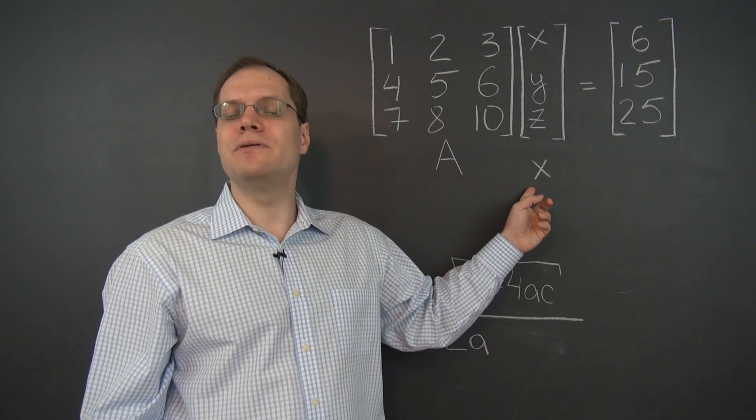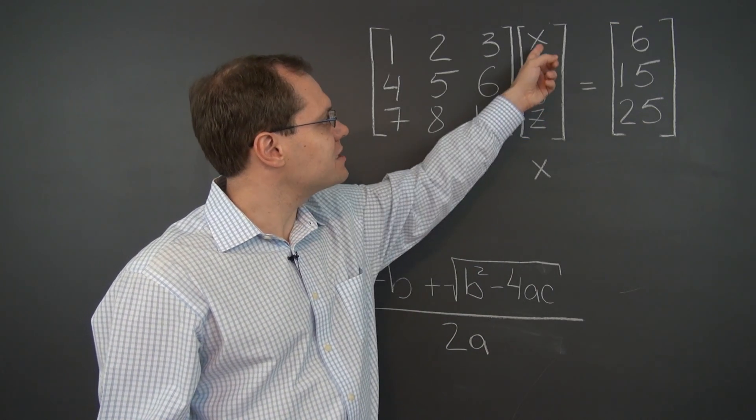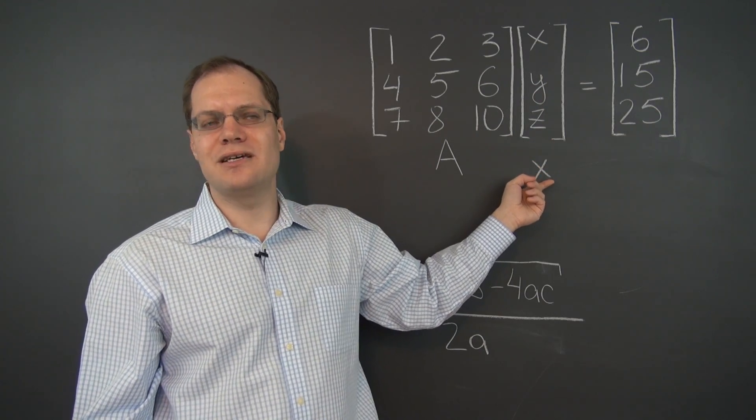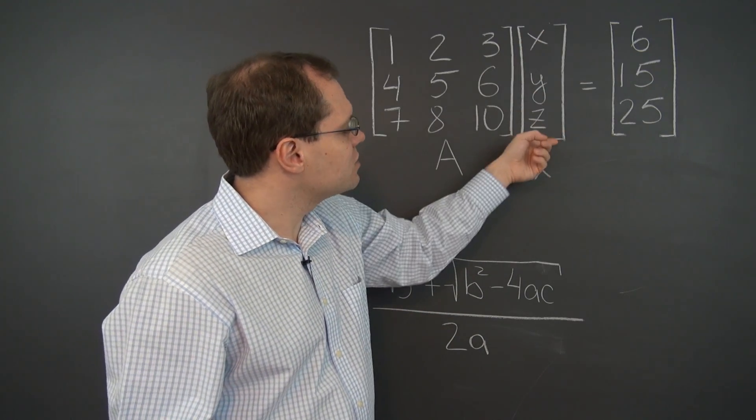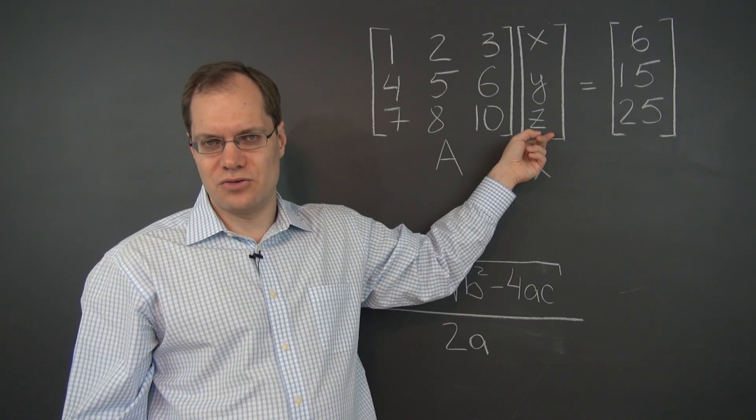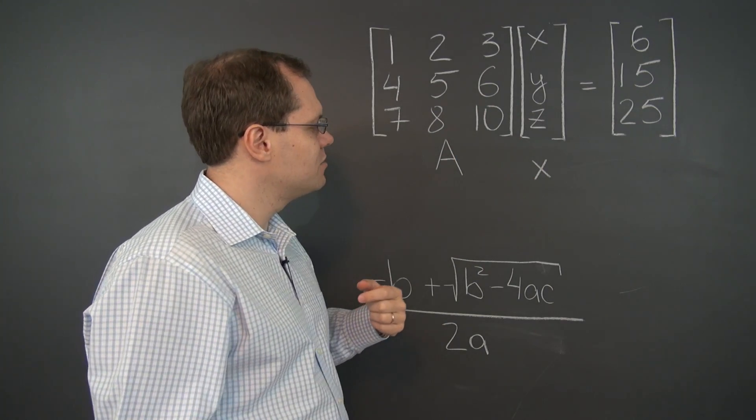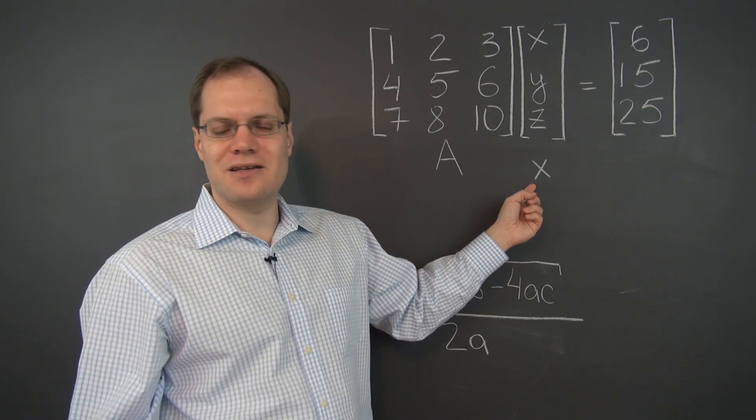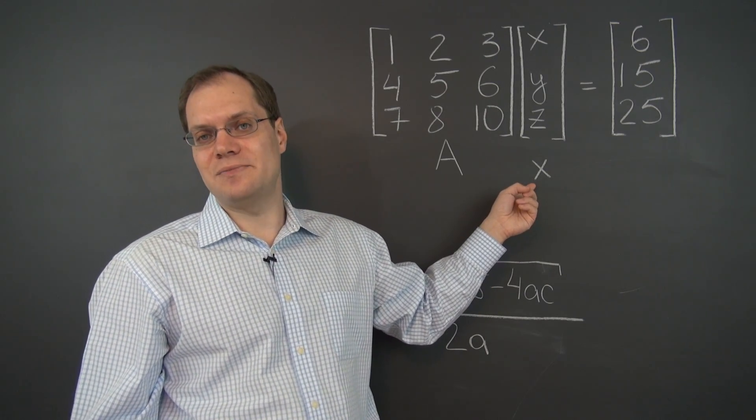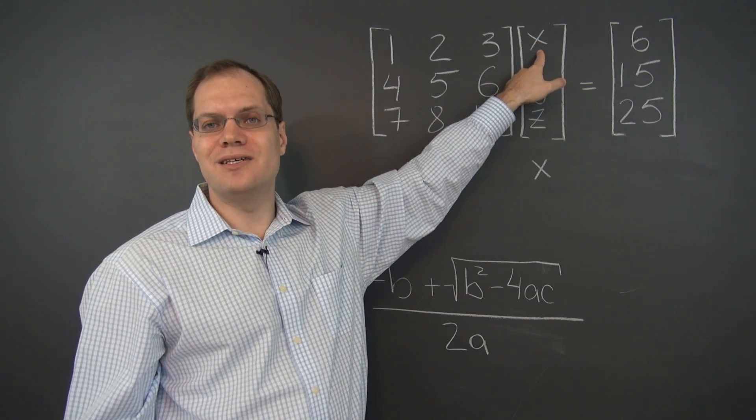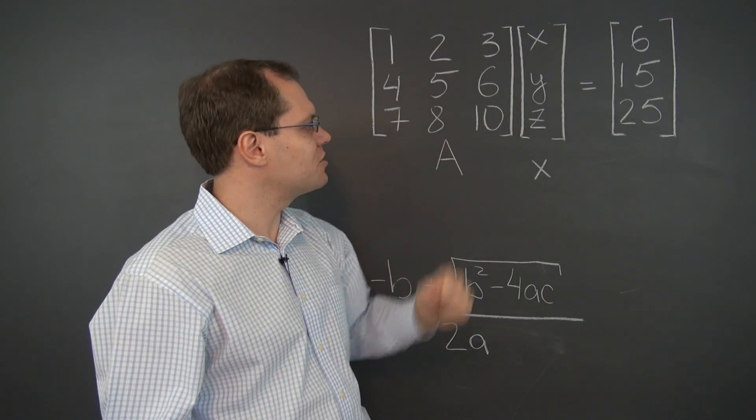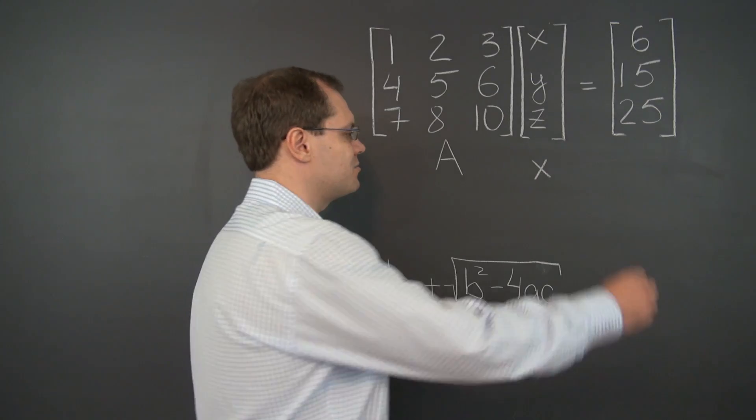And of course now we're double using the letter X. Because X is here as one of the variables. And now we're using it to denote the entire vector of unknowns. Or the entire matrix of unknowns. So if this bothers you, it shouldn't bother you. Because depending on the context you'll be able to tell what X means. But if it really bothers you, you should probably rename this X into something else. Maybe start with the letter Y. Doesn't really matter.